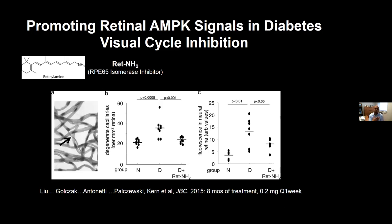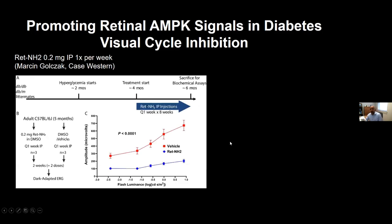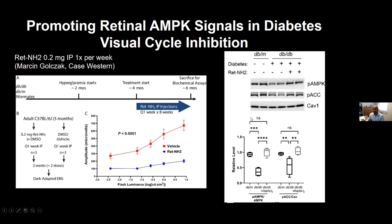We decided to look at this intervention in terms of metabolic signaling. We took db/db animals at about four months of age and planned eight-week injections — once a week, intraperitoneally — at the same dose used in the JBC paper. As a pilot experiment, we did two-week short therapy looking at the dark-adapted ERG, and retinyl amine even after two weeks had a very robust effect on the dark-adapted ERG. In contrast to vehicle-treated db/db animals, which show hypophosphorylation of AMPK and acetyl-CoA carboxylase, retinyl amine corrects both of those abnormalities.